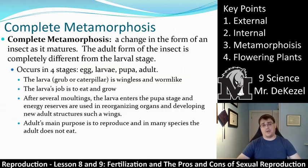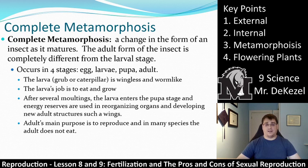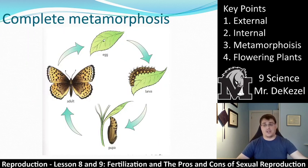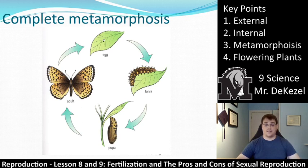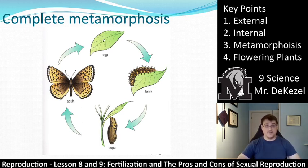Complete metamorphosis is a change in the form of an insect as it matures — it changes completely. The adult form of the insect is completely different from the larval stage. Generally, it has four stages: the egg, larva, pupa, and adult. Looking at the diagram, we start with an egg, it hatches and becomes a larva — often known as a caterpillar — it then makes its cocoon, called a pupa, and turns into a butterfly, something completely different from what we began with. It actually needs to completely change its body makeup, dissolving itself inside and becoming something completely different.